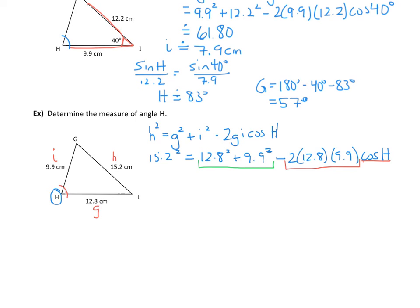Starting with 15.2 squared, I'll subtract 12.8 squared and subtract 9.9 squared from both sides, and that will equal this calculation here involving cosine of angle H.